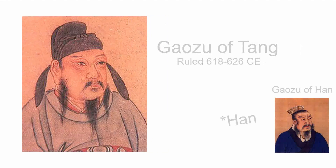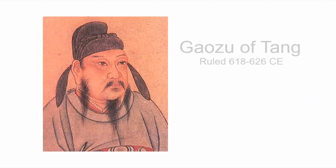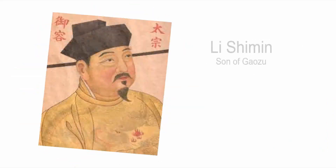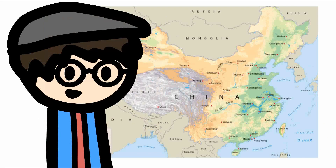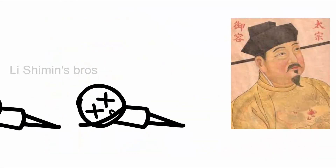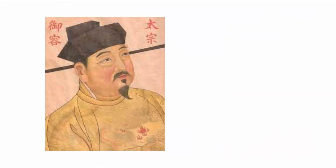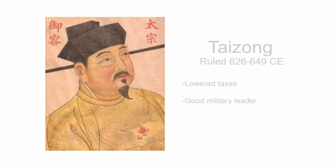Not the one from the Qin Dynasty — Yao Zhu of Tang was originally known as Li Yuan before becoming emperor. Anyways, while Yao Zhu ruled, his son Li Ximin was his chief general. Although he helped gain control over eastern China, he killed his brothers, which led him to take the throne after his father died. Despite that, Li Ximin became known as Taizong and was a great leader. He lowered taxes and became a good military leader.